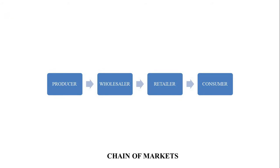Now, chain of market. Students, we will try to understand what is chain of market. It is a series of markets that are connected like links in a chain because products pass from one market to another. Chain of markets is a group or series of markets where products pass from one market to another and thus it is interconnected through a chain.